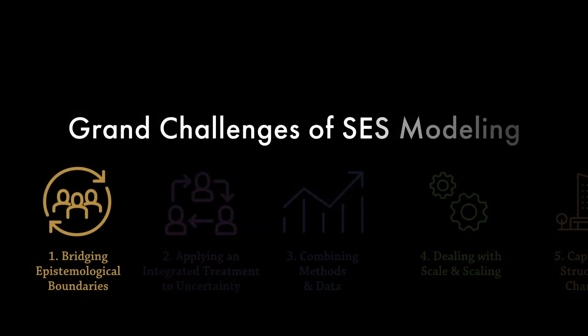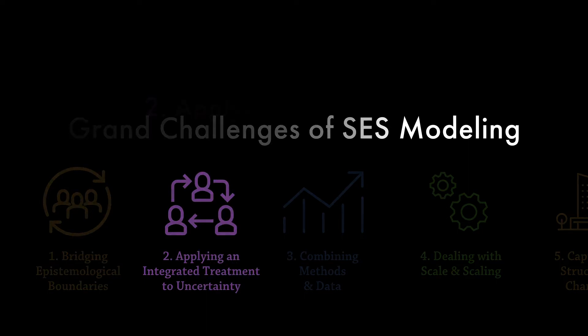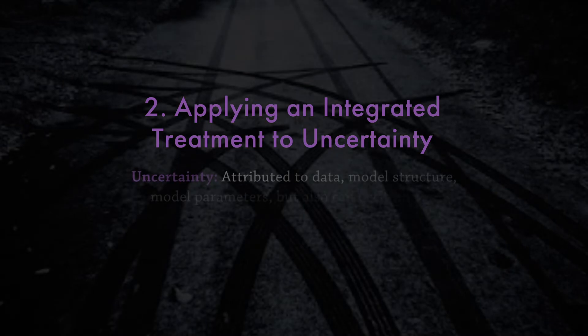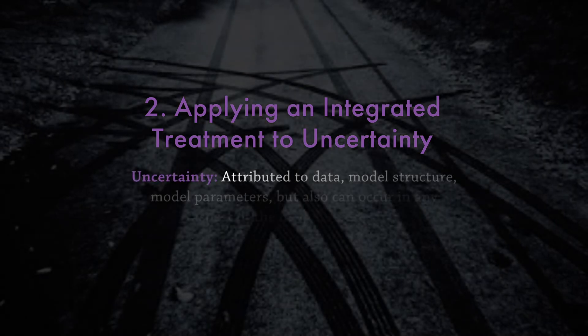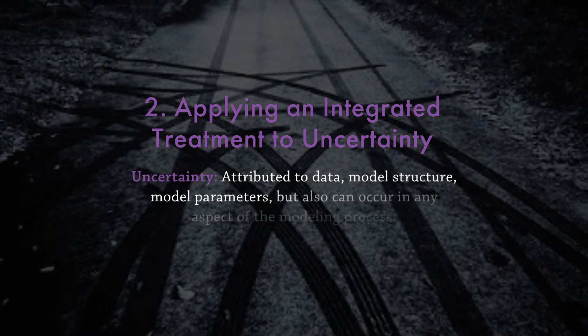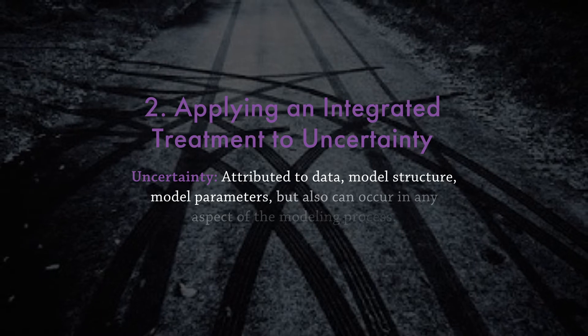Grand Challenge 2 is related to how uncertainty is treated when modeling SAS. In the modeling literature, the main sources of uncertainty are often attributed to data, model structure, and model parameters. But we know that this is a very partial view of uncertainty.